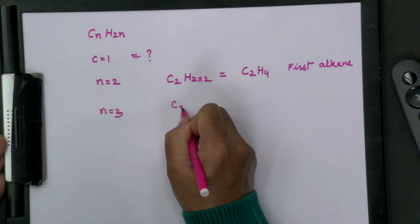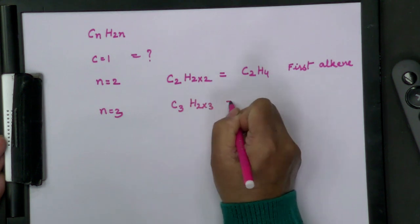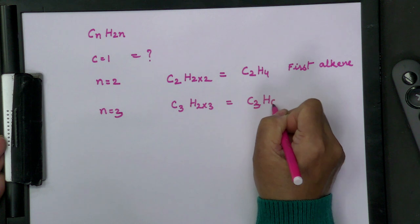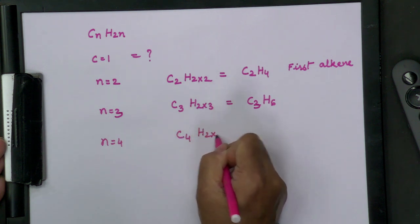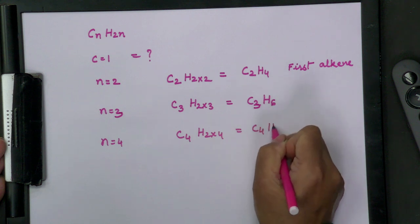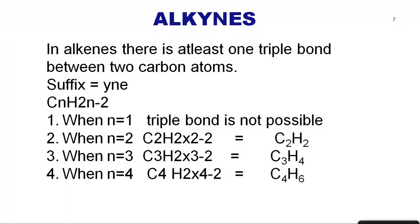Continuing alkenes: when n = 3, it is C₃H₆. When n = 4, it is C₄H₈. Notice that the number of hydrogen atoms is exactly double the number of carbon atoms in alkenes, making it easy to identify them. So it is easier to find out which formula belongs to an alkene.